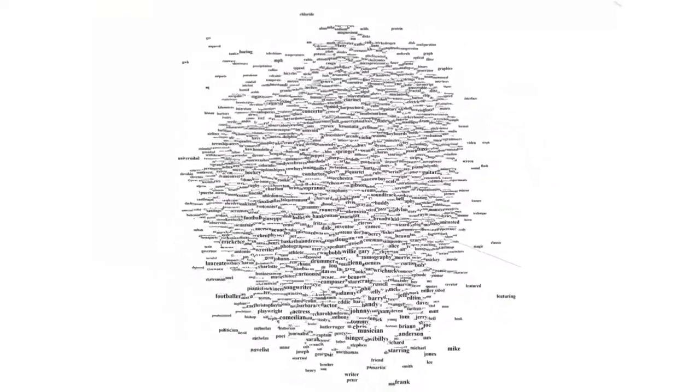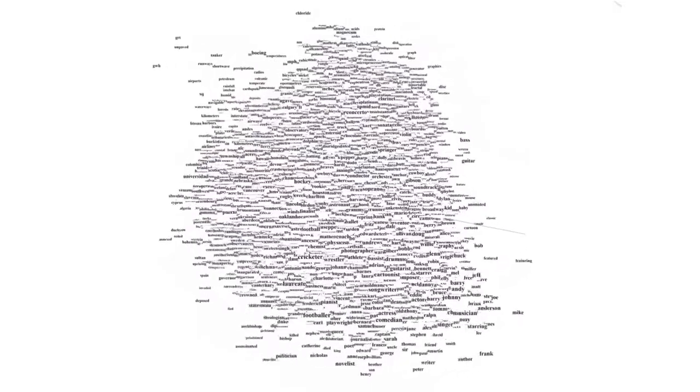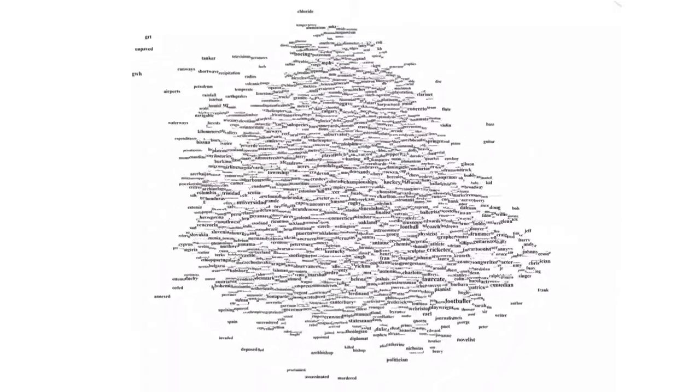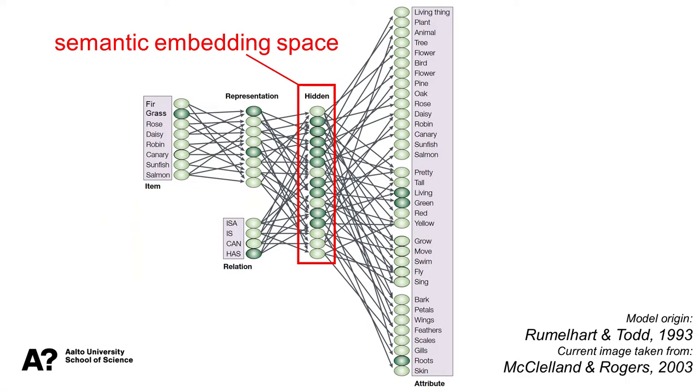A third interesting property of this semantic embedding space is that directions through this space also have meaning. And that is something you will experiment with yourself in an exercise that I will introduce at the end of this lecture. Now that you are familiar with the concept of a semantic embedding space, I can explain to you what's going on in this hidden layer of the model we looked at earlier. Each node in this layer represents a single dimension of a semantic embedding space. And together, the activity across these nodes represent a location in semantic embedding space.